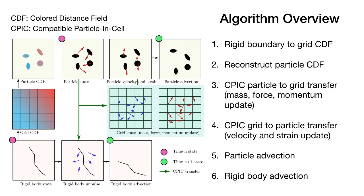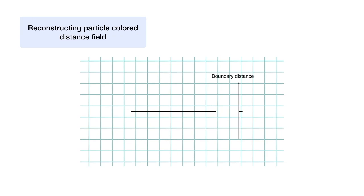This first-order approximation is used as both the affine velocity field for APIC and the velocity gradient for strain update. Finally, we advect particles and rigid boundaries. CDF consists of two parts: the color, which is the relationship to neighboring boundaries, and the value, which is the distance to the closest boundary.